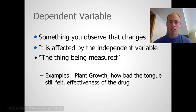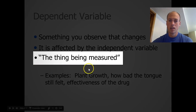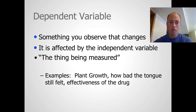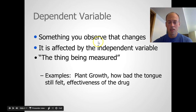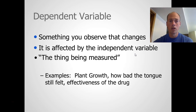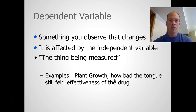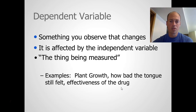The dependent variable — I always want you to think of it as the thing that the experimenter is measuring. The thing you measure in the experiment. The dependent variable is something that you observe that changes; it might be affected by the independent variable. In the plants example, you're measuring plant growth. In Ada's hot pepper example, you're measuring how bad the tongue still felt. For the drug trial, you're measuring the effectiveness of the drug — is the common cold still there, or has it been cured? The thing you're measuring is the dependent variable.